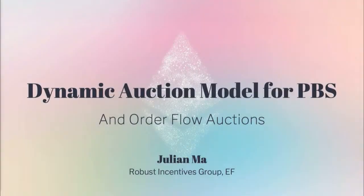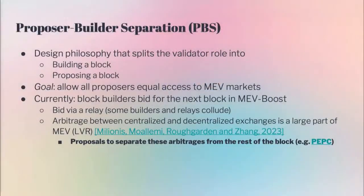Today I'll be talking about some preliminary work from us at the Robust Incentive Group on modeling the PBS auction in a dynamic way. This should also be applicable to proposer-builder separation and order flow auctions. First I'll give a bit of a recap on PBS. In this setting, we're looking at a more agnostic PBS setting — not MVV Boost specifically or ePBS — but the design philosophy that splits the validator's role into block building and block proposing, splitting the complexity of block building, which will have centralization forces, so that we can keep a decentralized validator set.